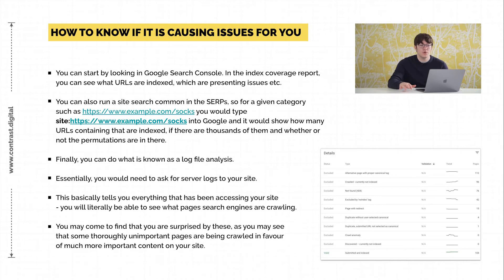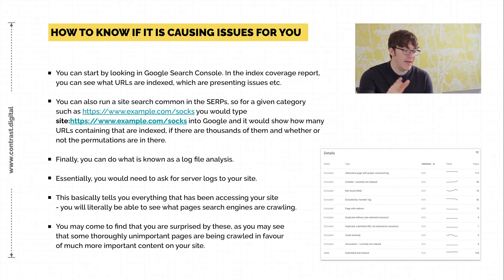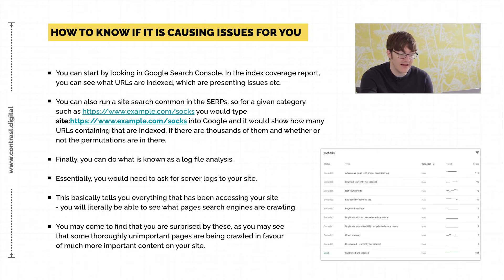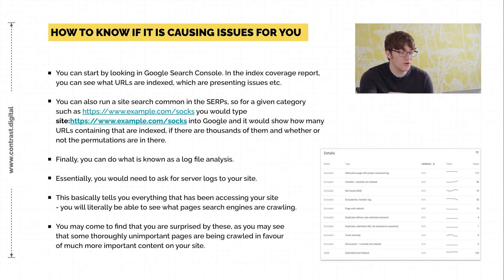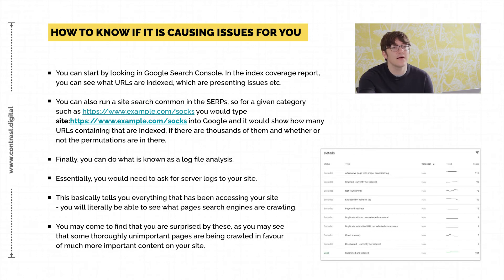We're going to jump into Google Search Console. Using socks as our example, you could take your URL, paste it into the search bar at the top, and you'll get details on that section. As you can see from this screenshot, we get an overview of that category to see which pages are indexed and which aren't. This gives us an idea — in this case we can see that pages are actually being indexed correctly and there's no issue. Another quick way is if you know how many products are in the category, say 50, do a site search in Google. If it pulls back more than 50 products — say thousands — you can see it's indexing the parameters.